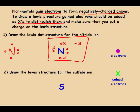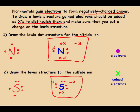Try the sulfide ion on your own — restart when you have an answer. Sulfur should have started with six valence electrons. It makes a negative two charge, so we gain two more: gain one, gain two, and we have eight valence electrons.